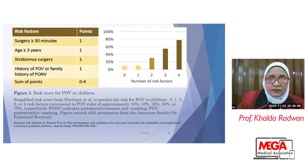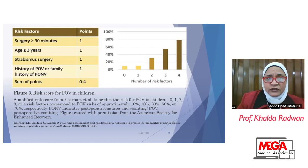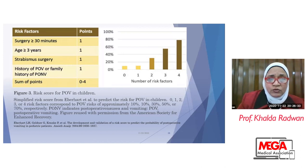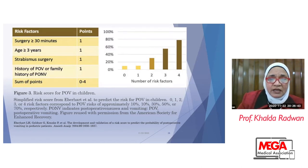For children, postoperative vomiting is assessed rather than nausea, since nausea cannot be estimated thoroughly in children. Risk factors in children by Eberhart et al. include duration of surgery more than 30 minutes, age more than three years, certain types of surgery such as strabismus or eye surgery, and a family history of PONV. This scoring system ranges from zero to four.